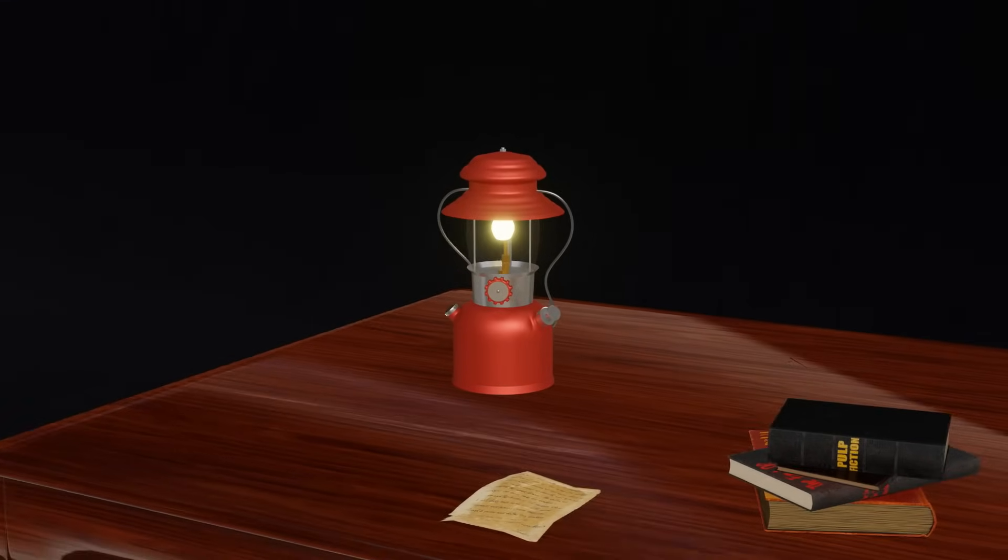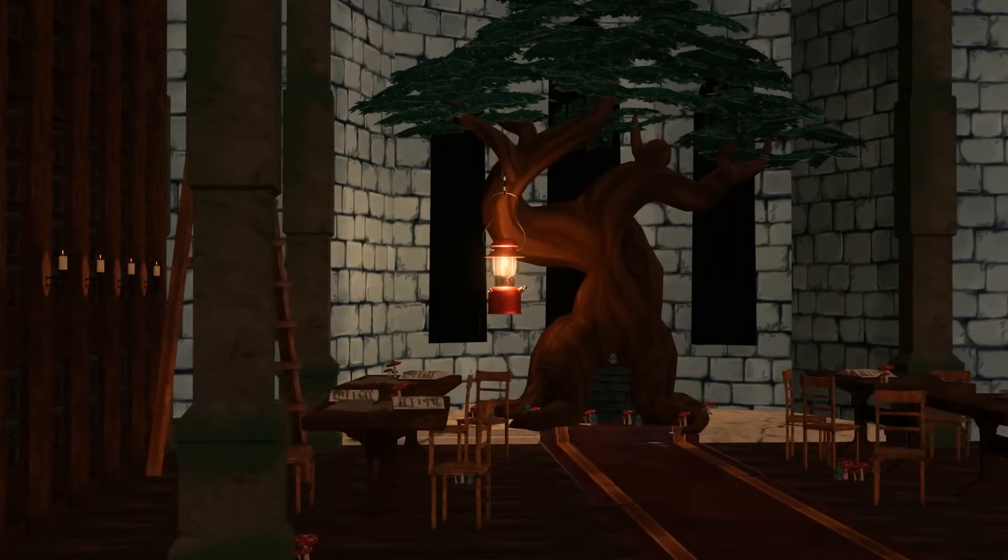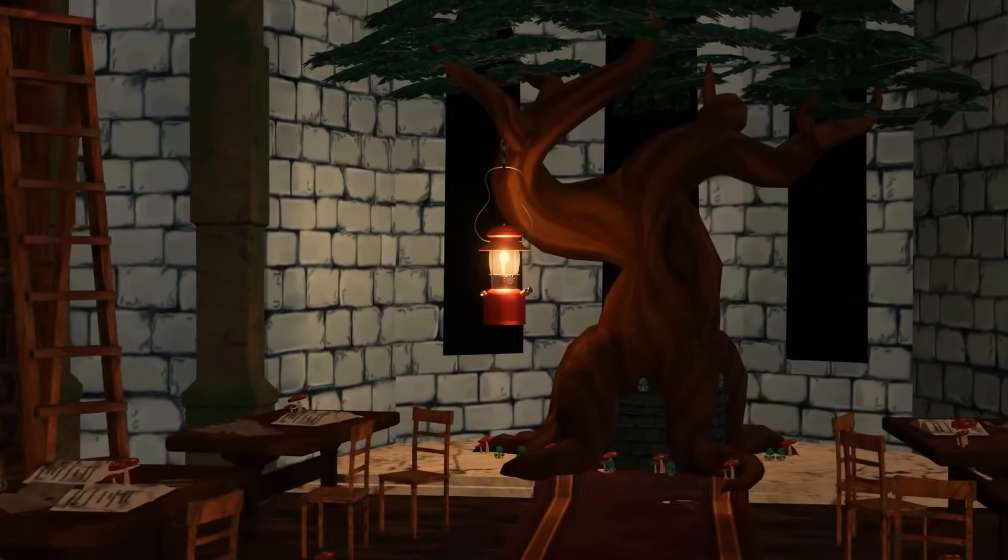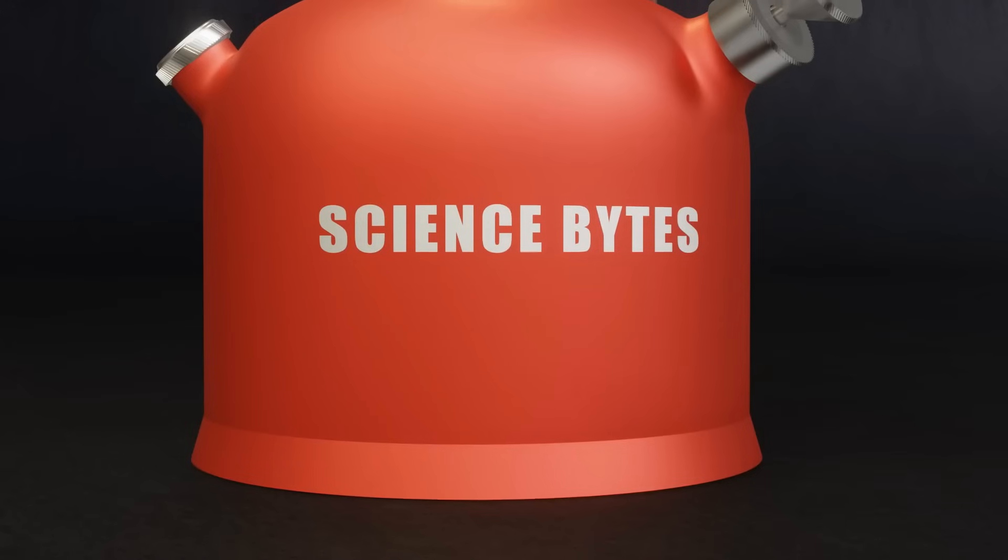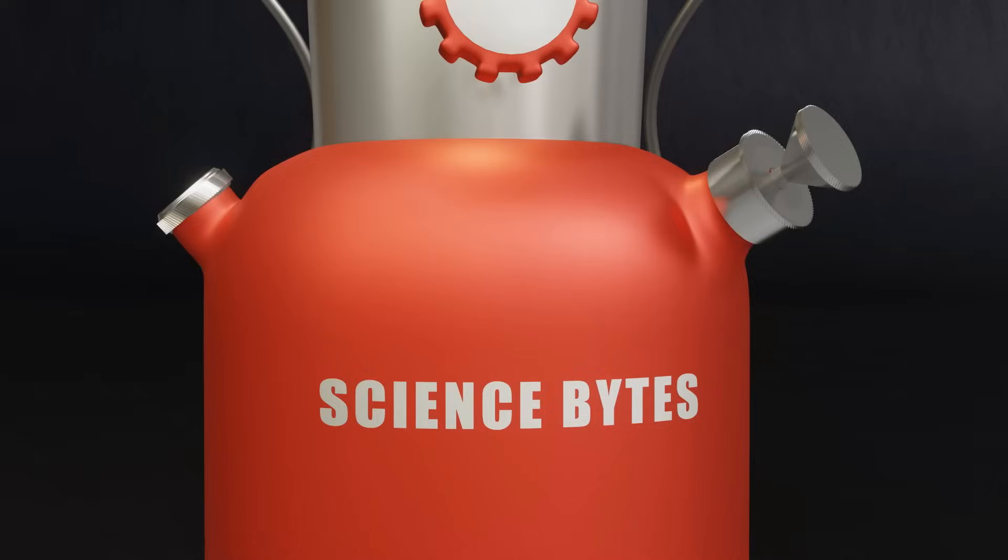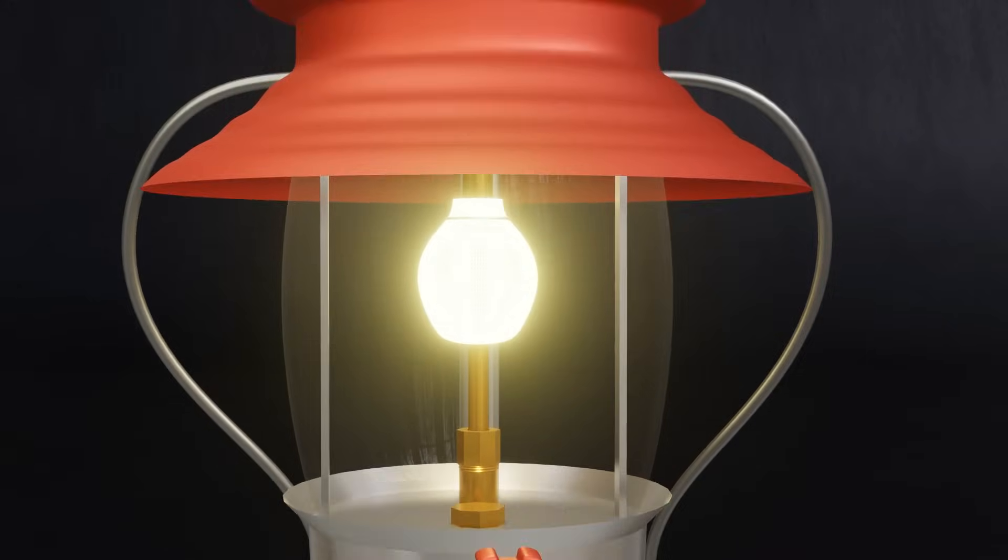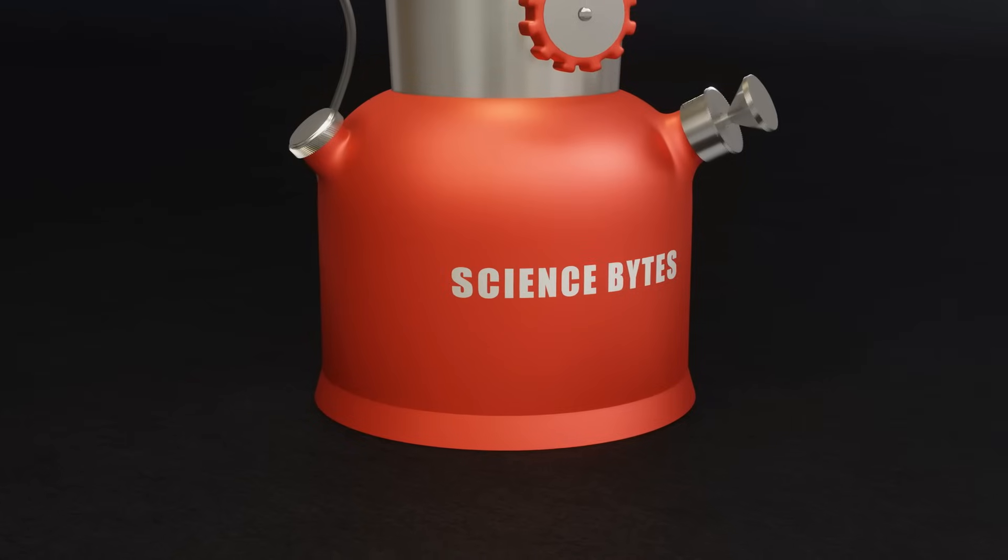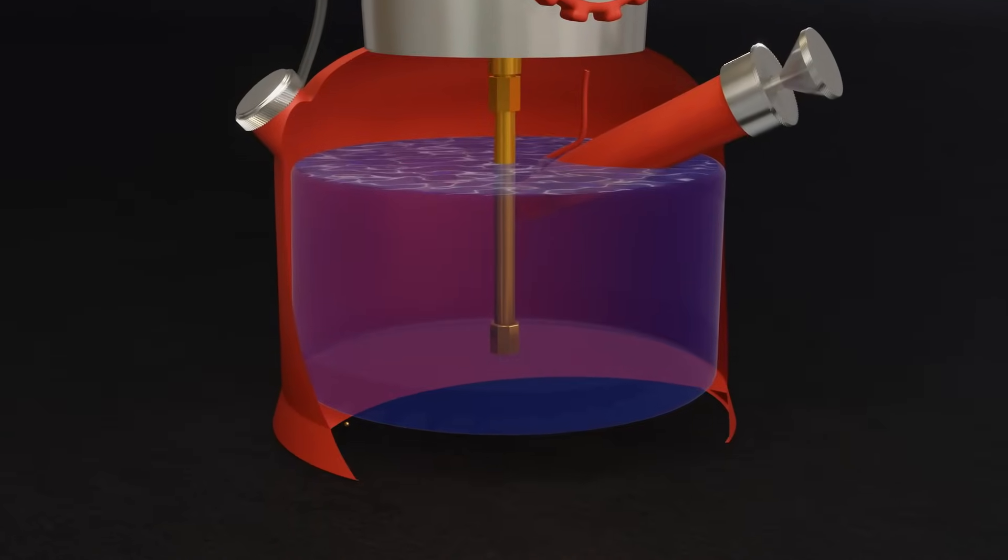Before the advent of electricity, pressure lamps were a popular source of illumination. These lamps, which used pressurized kerosene, provided a reliable and bright light for homes, streets, and public spaces. We'll start our journey from the very bottom of the lantern and work our way up to the top. At the base lies the fuel tank, which serves as the main reservoir for the fuel, usually kerosene.